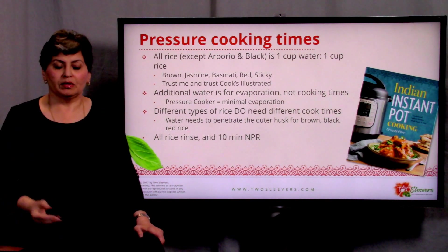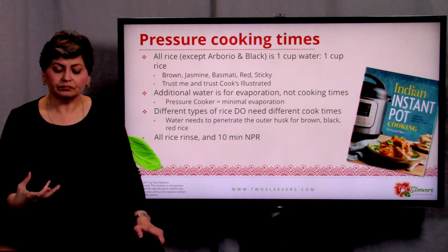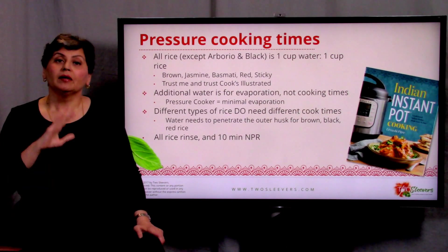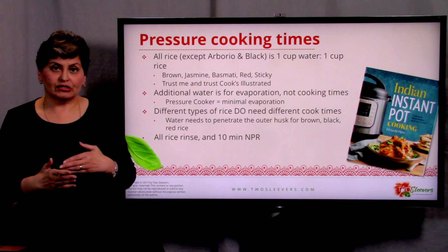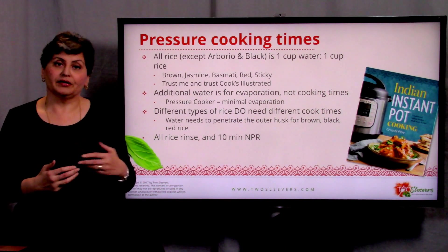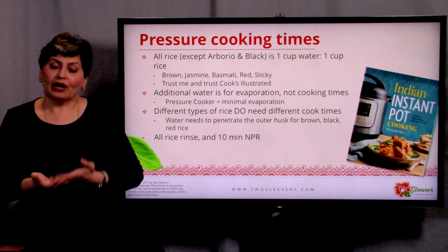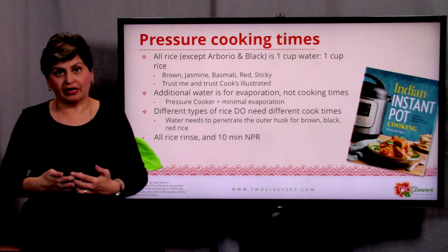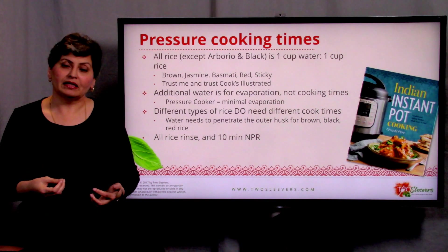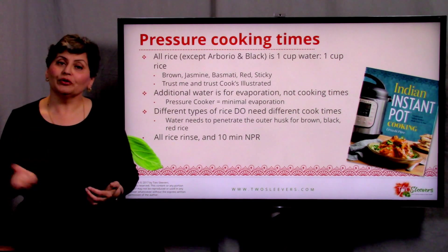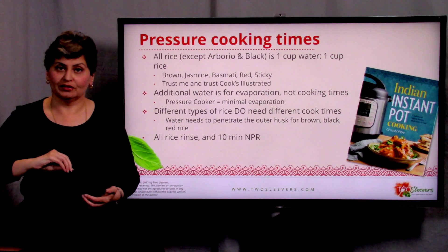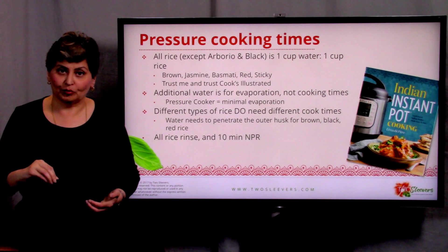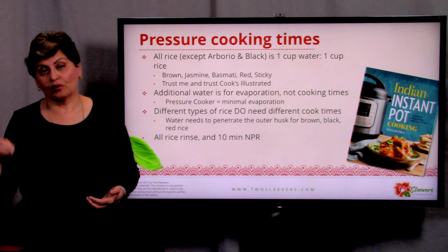You might ask why it's so different from stovetop, where brown rice takes a lot longer. It's not that brown rice needs more water than white rice — they both need the same amount. What brown rice needs is more time; the water needs to penetrate the husk before it can get to the starch and start to cook the rice. On the stovetop, the water evaporates, so you're adding extra water to compensate for evaporation. In a pressure cooker there is no evaporation, so you don't have to increase the amount of water — you do, however, have to increase the time.